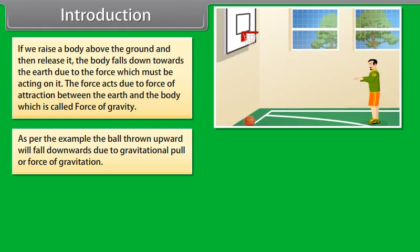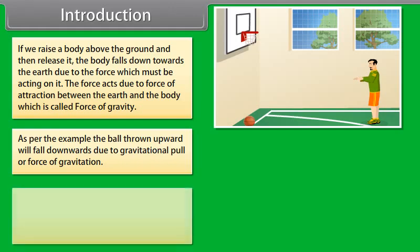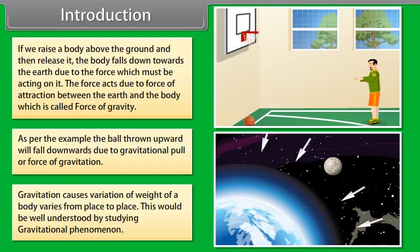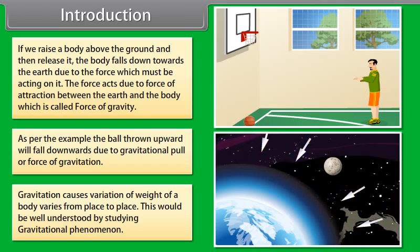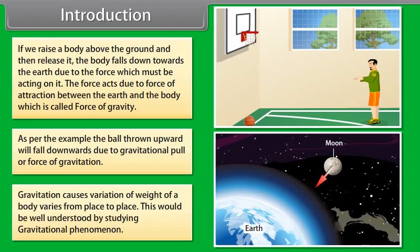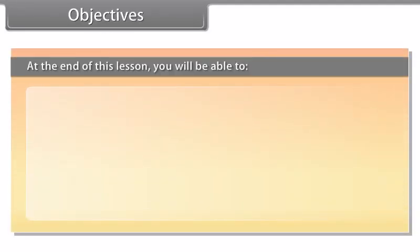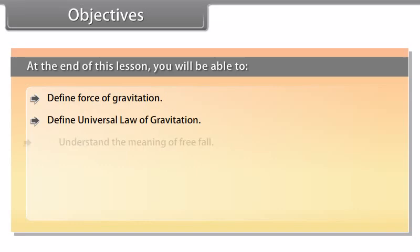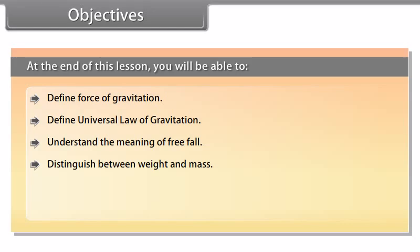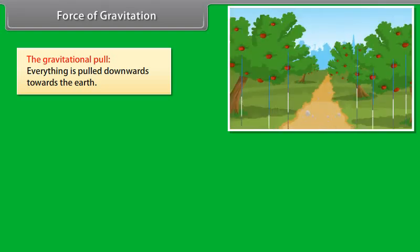Gravitation causes variation of weight — a body's weight varies from place to place. This would be well understood by studying gravitational phenomena. Objectives: at the end of this lesson you'll be able to define force of gravitation, define the universal law of gravitation, understand the meaning of free fall, distinguish between weight and mass, understand thrust and pressure, and understand Archimedes' principle.